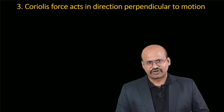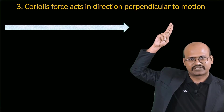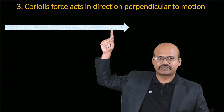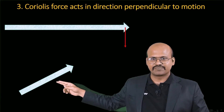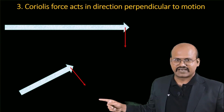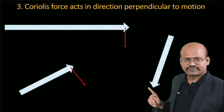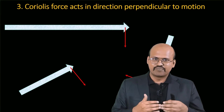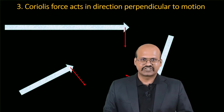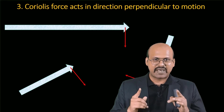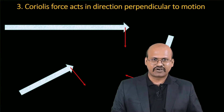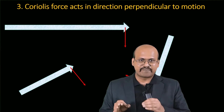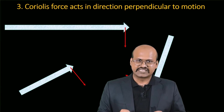The third characteristic of Coriolis force is that it acts in a direction perpendicular to the motion of the fluid. Whatever direction the air particle or fluid is moving, the Coriolis force will always be perpendicular to it. We know that any force acting perpendicular to a direction of motion does not change the magnitude of that motion — it only changes the direction. Therefore, Coriolis force does not change the speed or magnitude of any fluid; it only changes its direction.